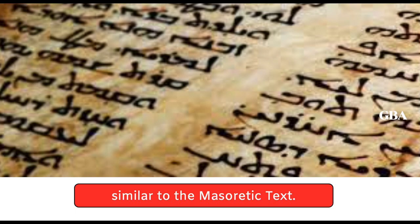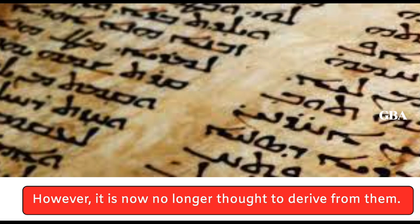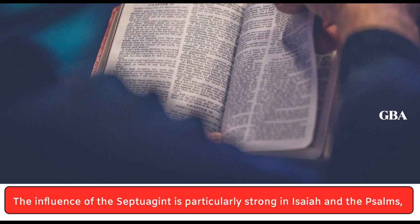It shows a number of linguistic and exegetical similarities to the Aramaic Targums. However, it is now no longer thought to derive from them. In some passages the translators have clearly used the Greek Septuagint. The influence of the Septuagint is particularly strong in Isaiah and the Psalms, probably due to their use in the liturgy.